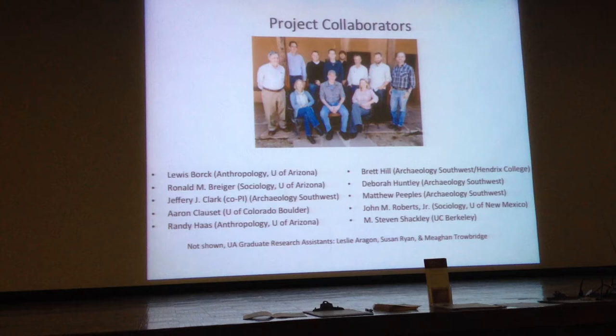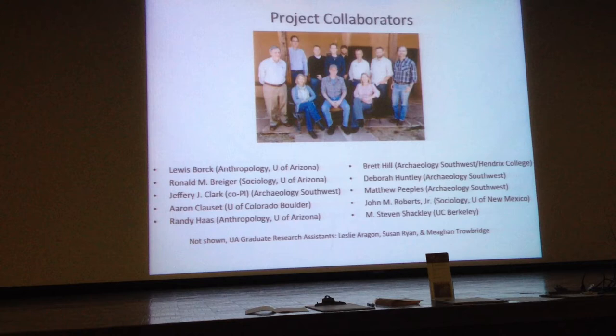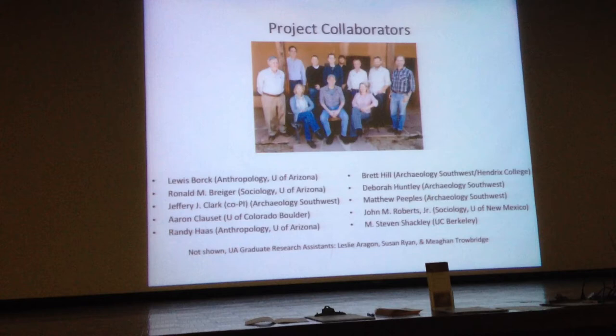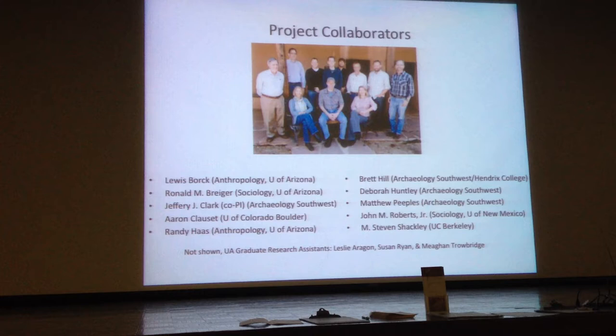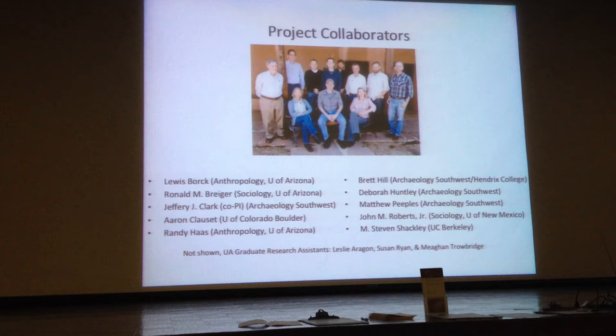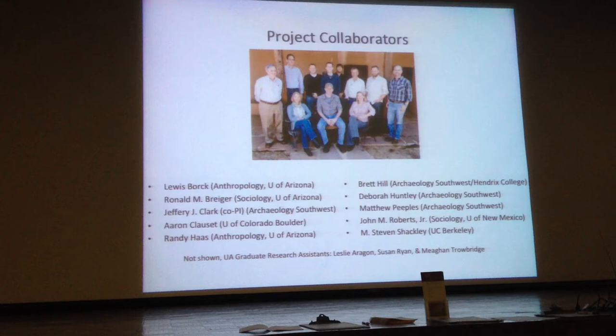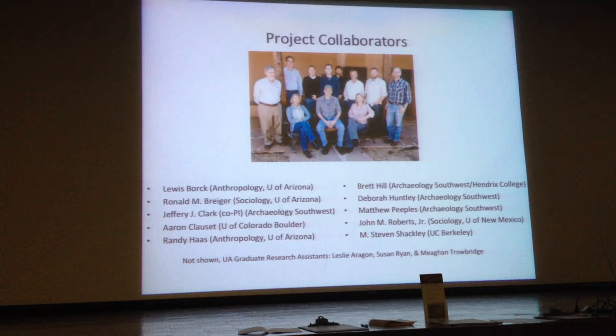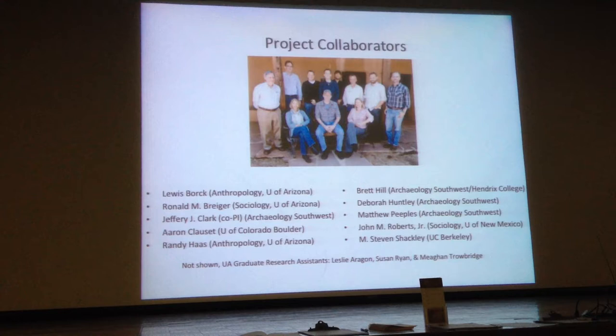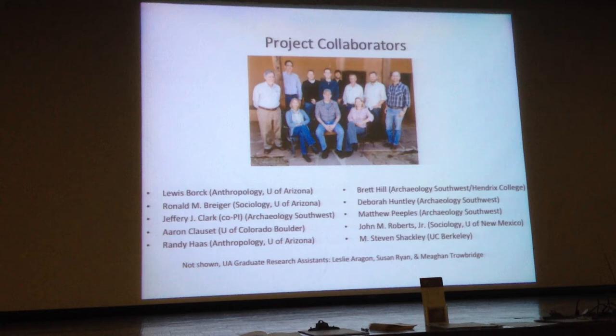From the left standing: Ron Breiger, who is a professor of sociology and one of the leading experts in social network analysis — he's the former editor of Social Networks. Next to him, the very tall fellow is John Roberts Jr. — you may recognize his name because his dad is John Roberts Sr., the anthropologist who co-authored with Watts Smith. And then Matt Peoples, who is in the audience, has been a post-doc on the project, having joined first informally as a pre-doc and then hired as a post-doc.